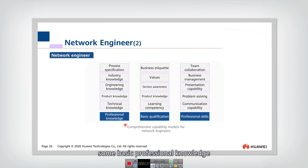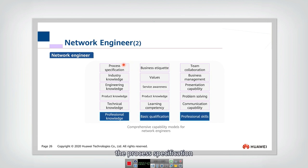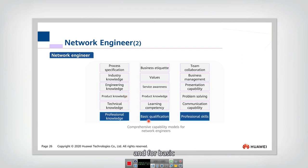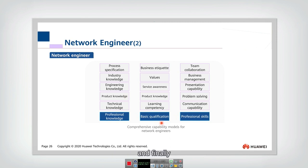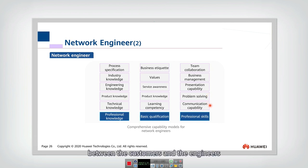A network engineer needs to grasp basic professional knowledge, have basic qualifications, and master professional skills. For professional knowledge, they need to know process specifications, industry knowledge, engineering knowledge, product knowledge, and technical knowledge. Professional skills include team collaboration, business management, presentation, problem solving, and communication between customers and engineers.